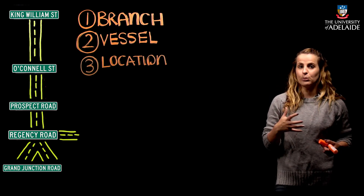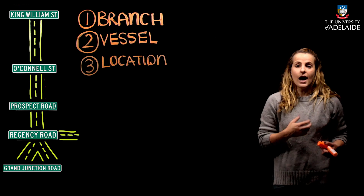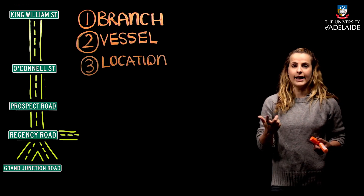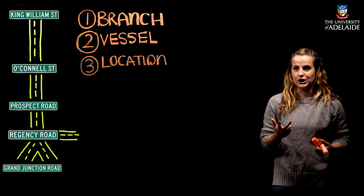There are three main branch types, and these are going to be a continuation, a collateral branch, and a bifurcation.